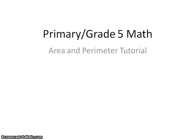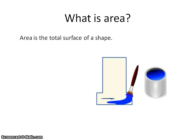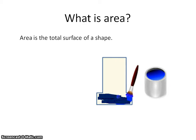Hello, today we'll be doing a chapter on area and perimeter. It is suitable for primary or Grade 5. Let's start with what is area. Area is basically the total surface of a shape. For example, think about how much paint would be required to cover this shape — you'll have to color all of it, and that will be the area.